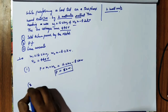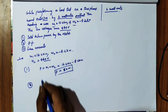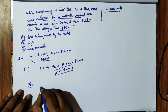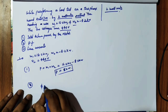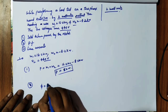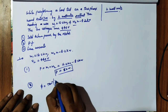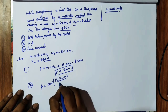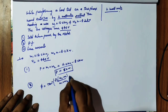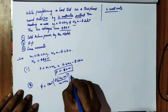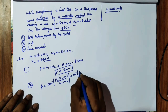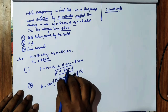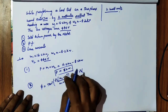Next, the question asks to find the power factor. To find the power factor, we need to find phi. The formula is: phi = tan⁻¹ of root 3 times (W2 minus W1) divided by (W1 plus W2).